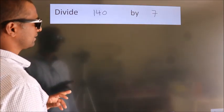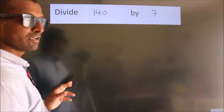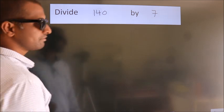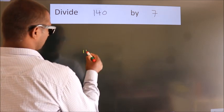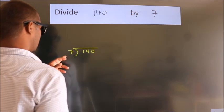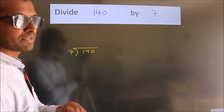Divide 140 by 7. To do this division, we should frame it in this way: 140 here, 7 here. This is your step 1.